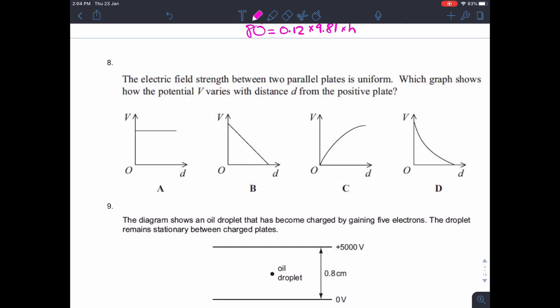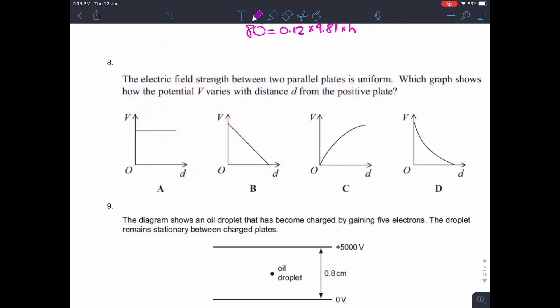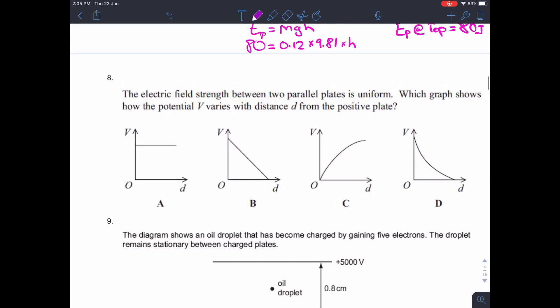Question eight, the electric field strength between two parallel plates is uniform. Which graph shows how the potential V varies with distance D from the positive plate? Well, the way that I would do this is I would draw... I'm just doing it in a different colour so you can distinguish it from the question above. I would draw my parallel plates. That really helps me. So I'm going to say here are my parallel plates. Here's my field.